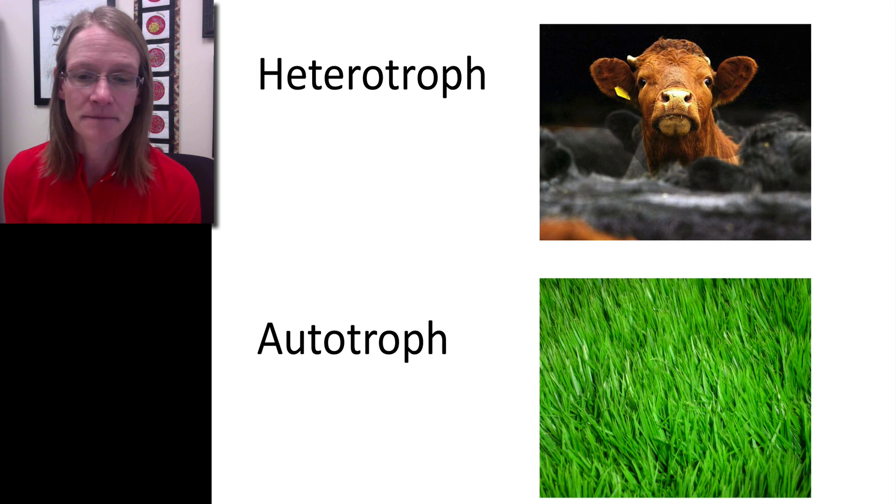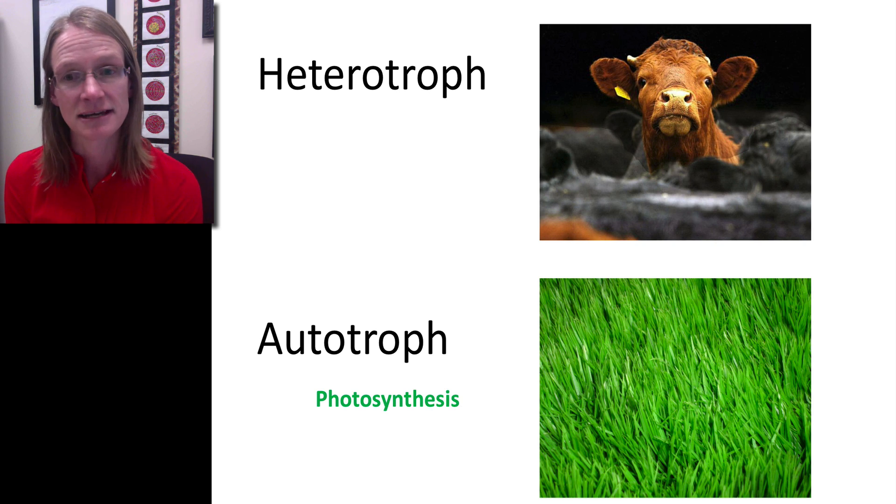You are a heterotroph. Everything else is considered to be an autotroph. Auto literally means self, so these are the self-feeders. They're able to provide the nutrition they need through their own means. In most cases, it's through the process of photosynthesis—they're actually making their own sugars, whereas heterotrophs have to consume other things.